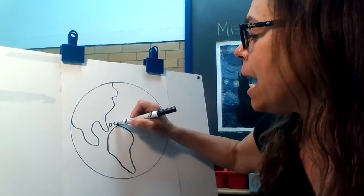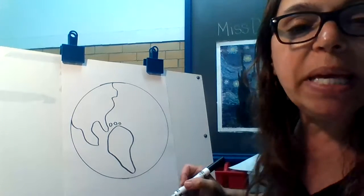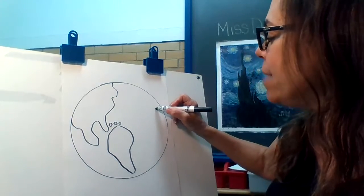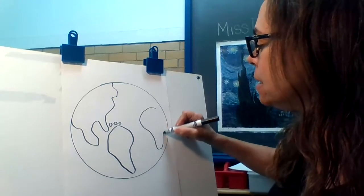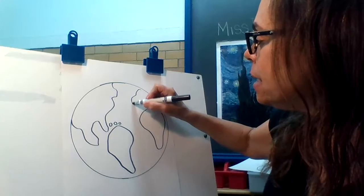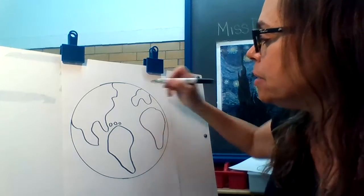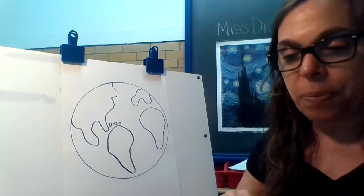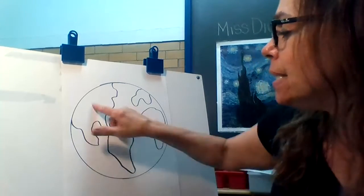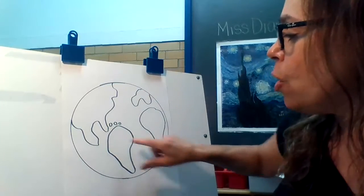We have some little islands over here in the Caribbean. Then we have Africa over here, and Europe over here. So we have our land and our oceans.